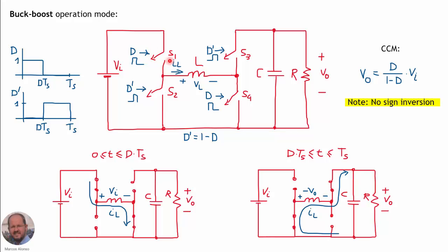In the buck-boost operation mode, we activate switches S1 and S4 with signal D, and switches S2 and S3 with signal D'. During the first interval from 0 to D·Ts, S1 and S4 are closed, applying the input voltage across the inductor, so the current increases. During the other interval from D·Ts to Ts, S3 and S2 are closed, applying a voltage equal to minus Vo across the inductor.